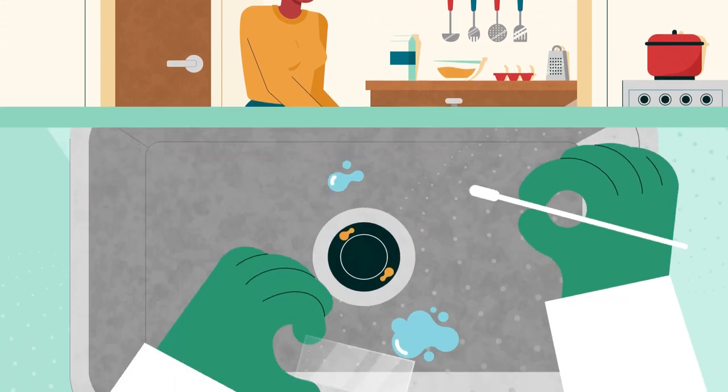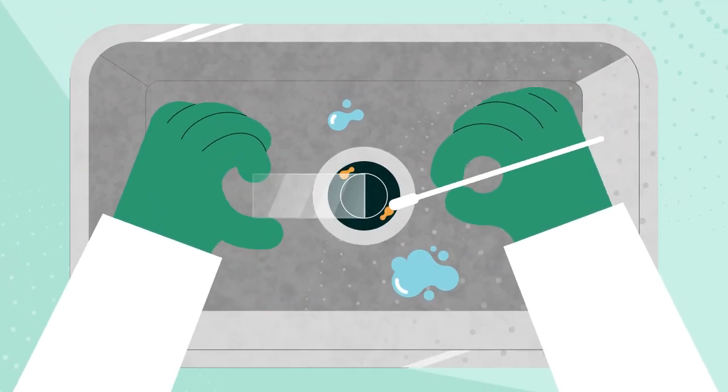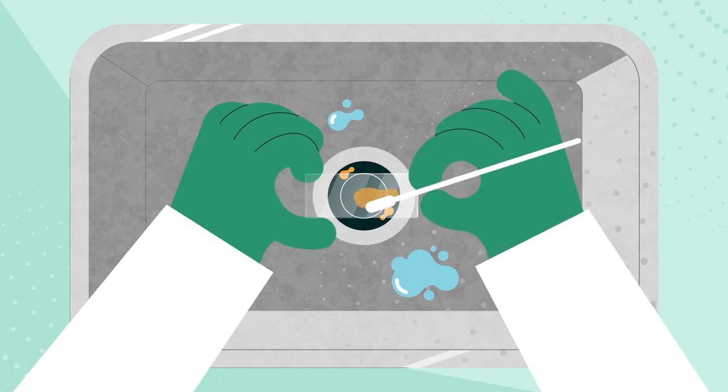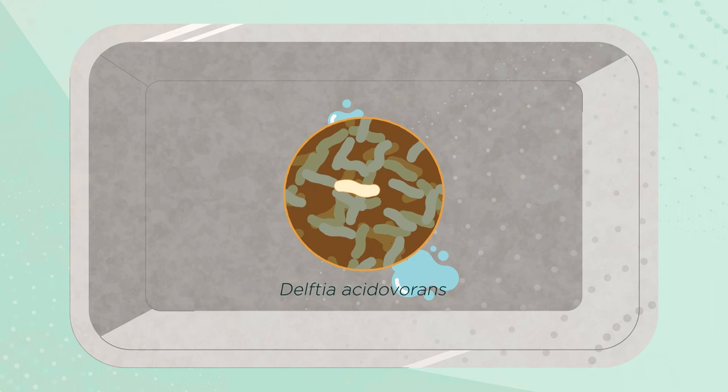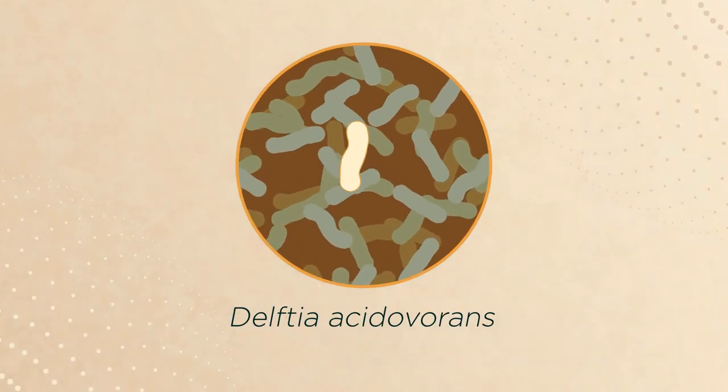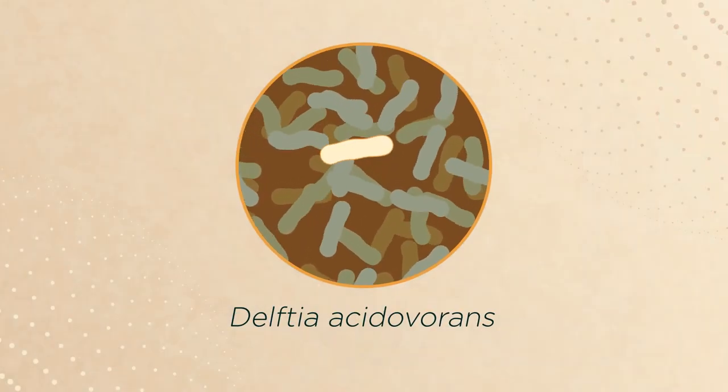In the fall of 2013, we examined kitchen sink drains as part of a course and found an intriguing microbe, Delftia acidovorans. This microbe was first identified in contaminated soils in Delft, Netherlands.